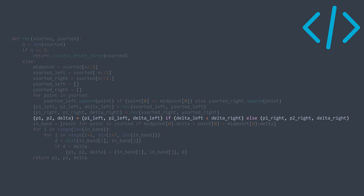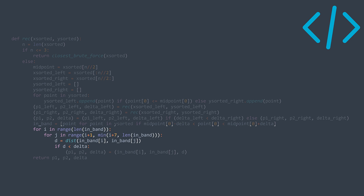Next, we find points in the band by traversing y_sorted and keeping only those whose x value is between midpoint's x minus Delta and midpoint's x plus Delta. Finally, for each point in the band, we traverse the next six points; if any distance is smaller than Delta, we update the closest pair and Delta. At the end, we return p1 and p2 — the closest pair — and their distance Delta.